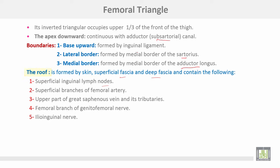It contains the following: 1. Superficial inguinal lymph nodes. 2. Superficial branches of the femoral artery, upper part of the great saphenous vein and its tributaries. Femoral branch of the genitofemoral nerve. Lastly, the ilio-inguinal nerve.